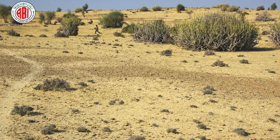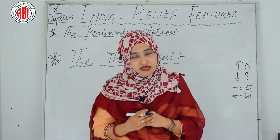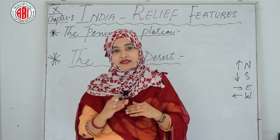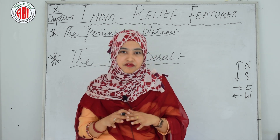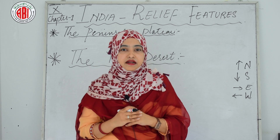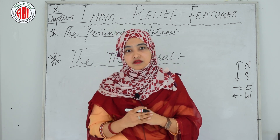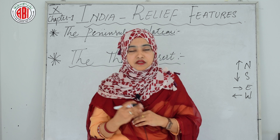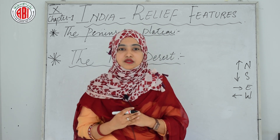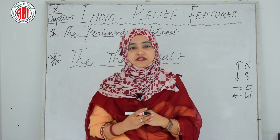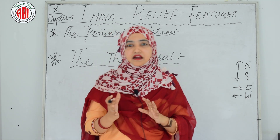The desert consists of sandy plains and rocky outcrops. It occupies much of western Rajasthan. It has an arid climate with very low vegetation cover. The desert land has very little water, so there is no agriculture and no fertile soil — only rocky outcrops and sandy plains.